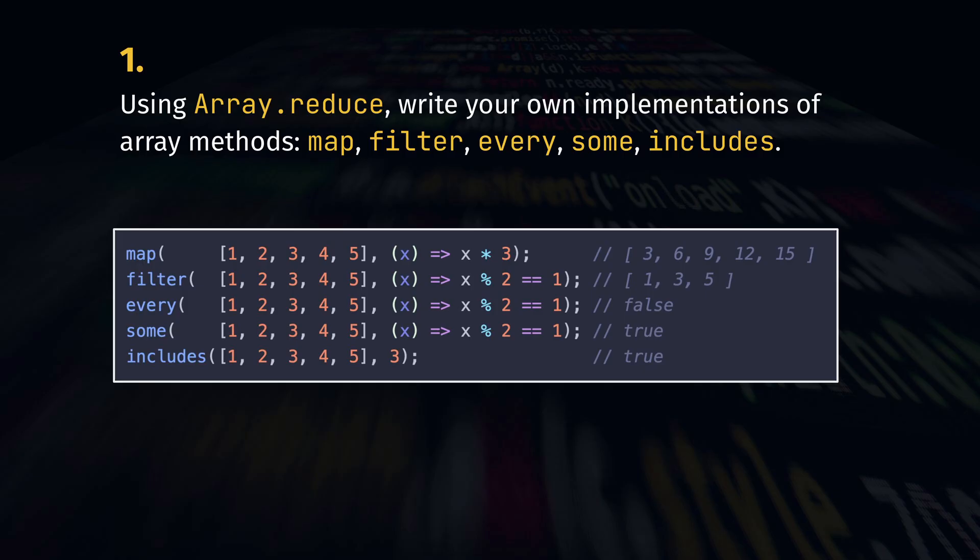Functional programming. Using the built-in method reduce, recreate the built-in array functions map, filter, every, sum and includes as in the example code.